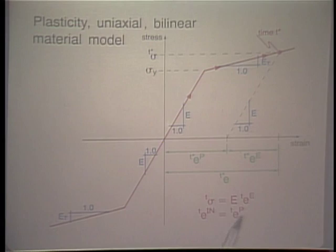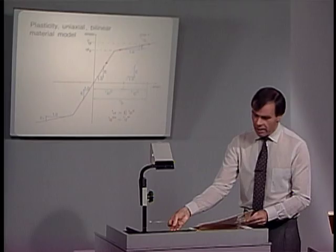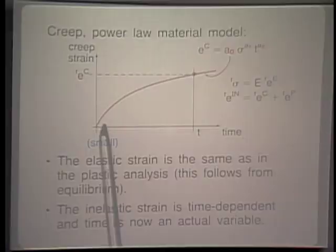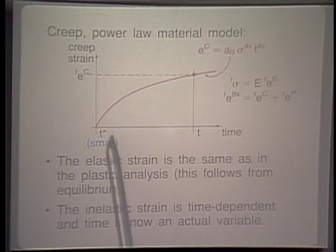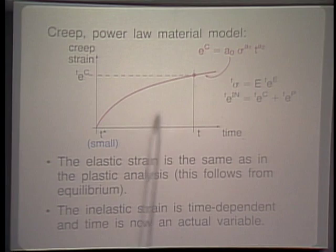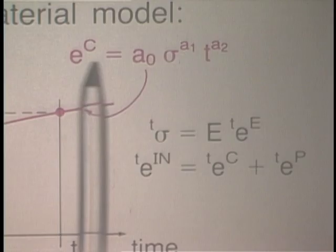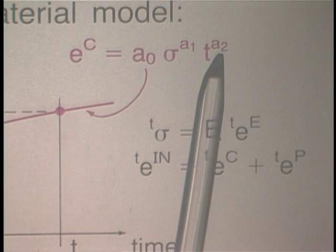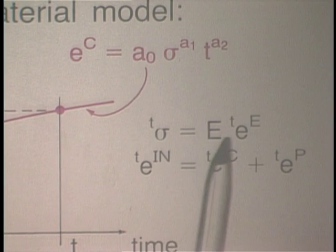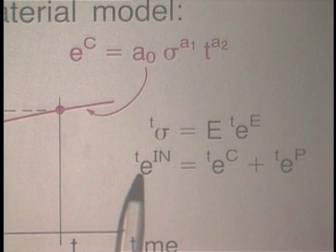From time t* onward, creep effects are modeled using a power law: ε_creep = A0 * sigma^A1 * t^A2, where A0, A1, A2 are material constants determined from laboratory tests. The stress is still given by Young's modulus times elastic strain, and the total inelastic strain is now the sum of the creep strain from this formula plus the previously identified plastic strain.